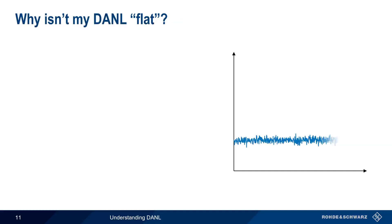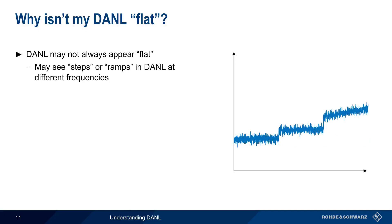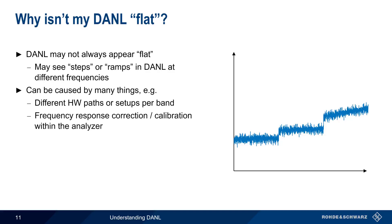Throughout this presentation, we've shown DANL as being relatively flat across the span. But there are some cases where DANL may not be flat. Depending on the frequency in the span, steps or ramps may appear when looking at DANL. These can be caused by things such as different hardware paths through the analyzer at different frequencies, or bands, or by frequency response correction or calibration within the analyzer. Depending on the analyzer and its settings, a non-flat DANL is normal and expected. Although this effect tends to be more common, or more noticeable, on older spectrum analyzers.